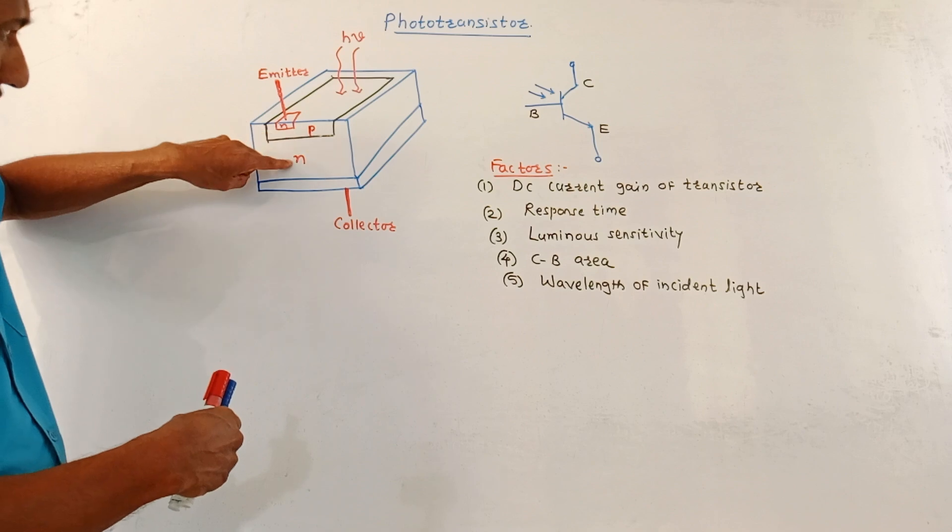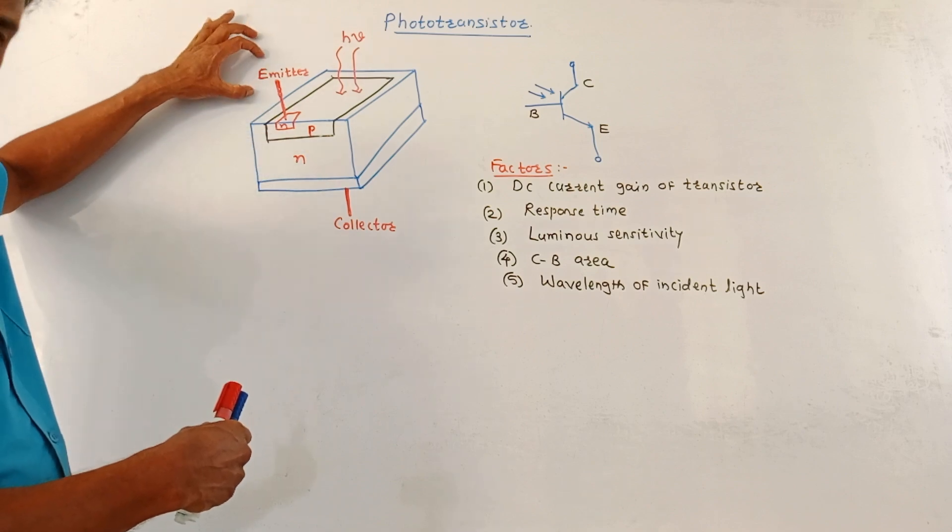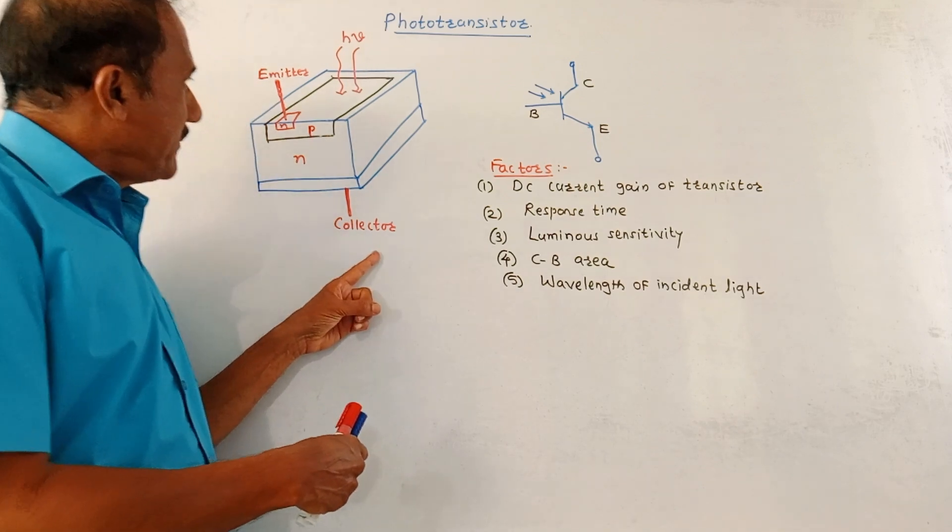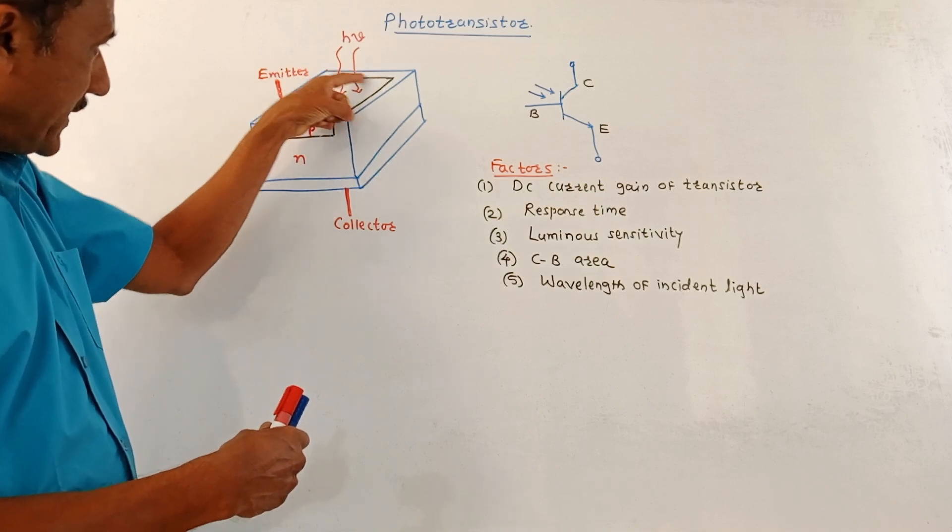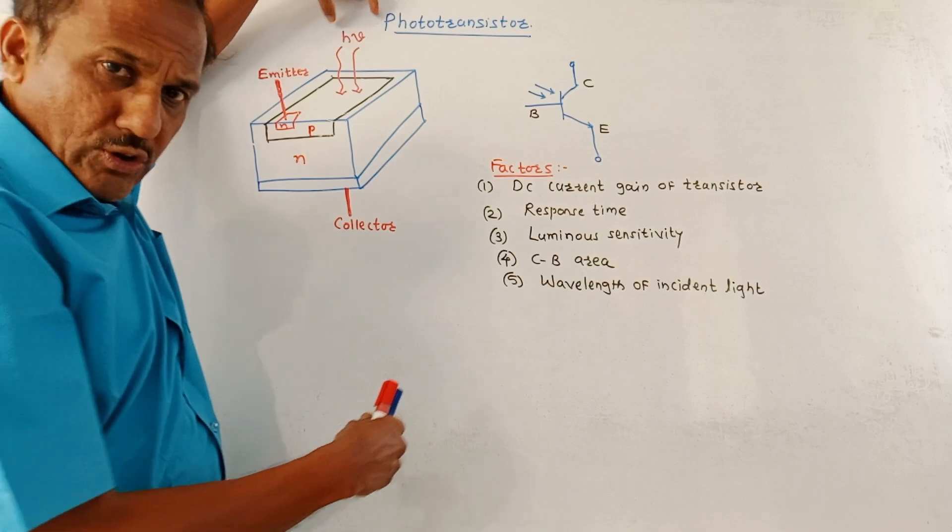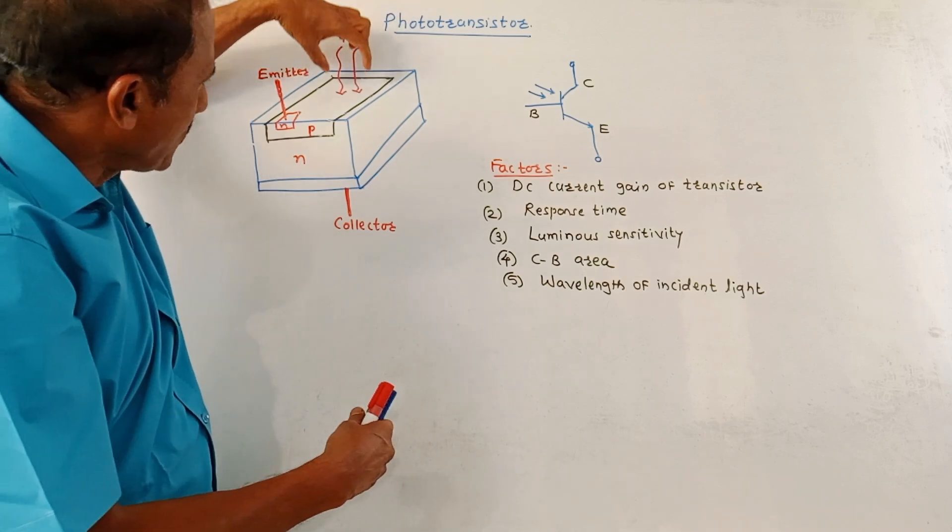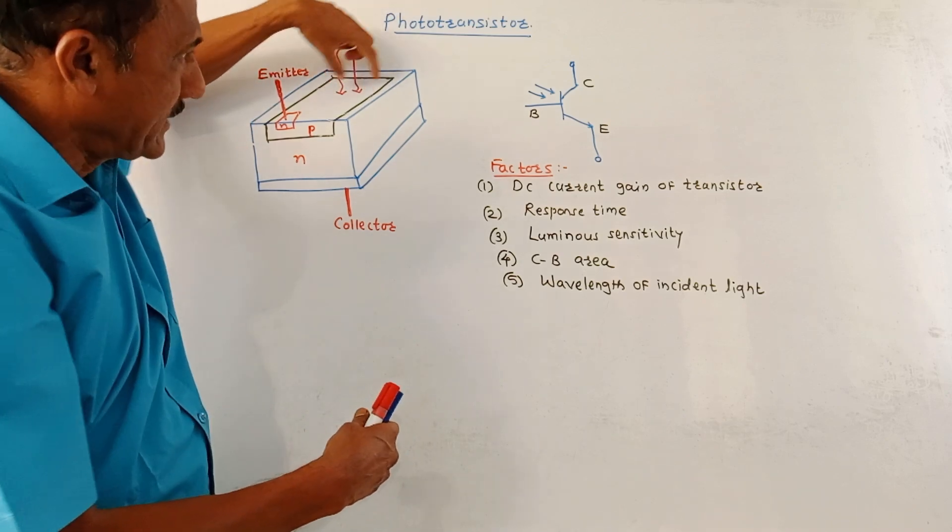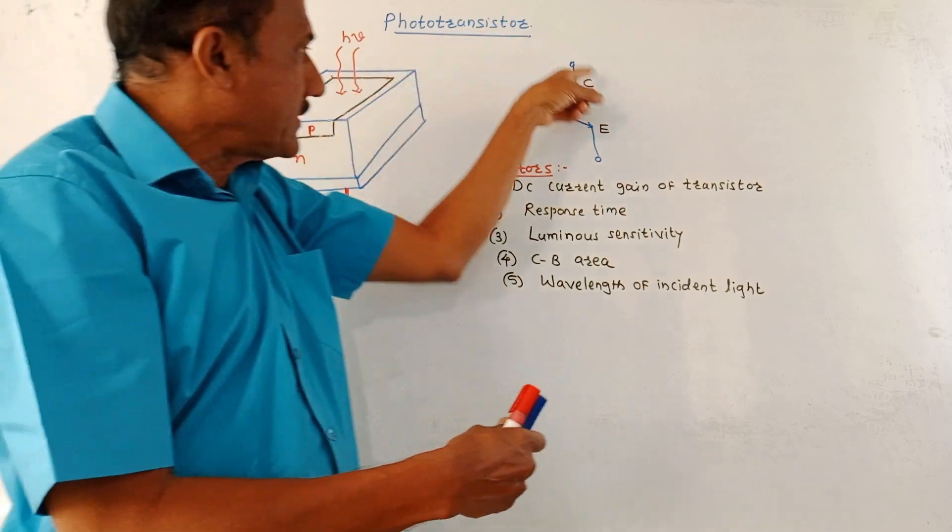This is NPN transistor. This one shows emitter terminal. This is collector terminal. And this part is for the base terminal. As shown in this diagram, incoming photons, that means incoming light rays falls on the base terminal of phototransistor. This is also shown in the symbol.